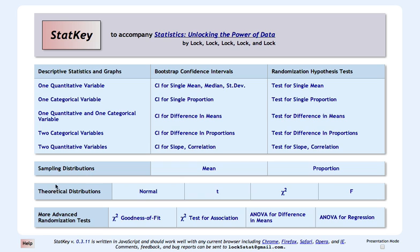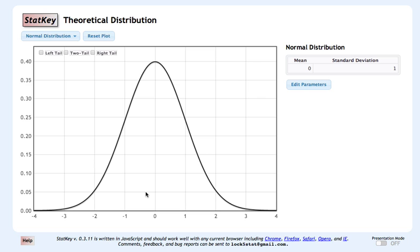We're going to go under this theoretical distributions tab and select the normal distribution. We'll leave it set on the standard normal distribution, which we know has mean zero and standard deviation one.